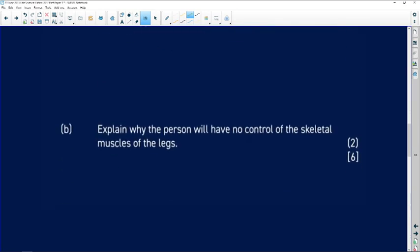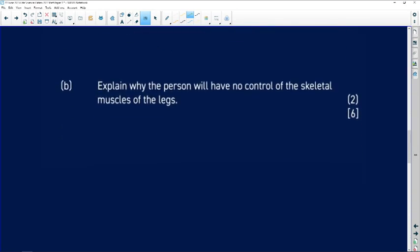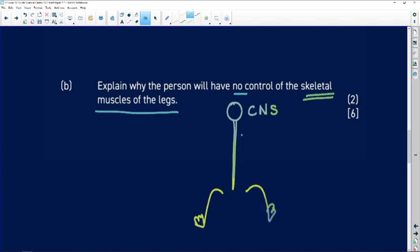Part B says explain why the person will have no control over the skeletal muscles of their legs. So you have your brain and your spinal cord as making up your central nervous system. Information from your legs, information from your arms or your upper limbs, and information from your liver, from your kidneys, from all of the organs that you have gets fed to the spinal cord.